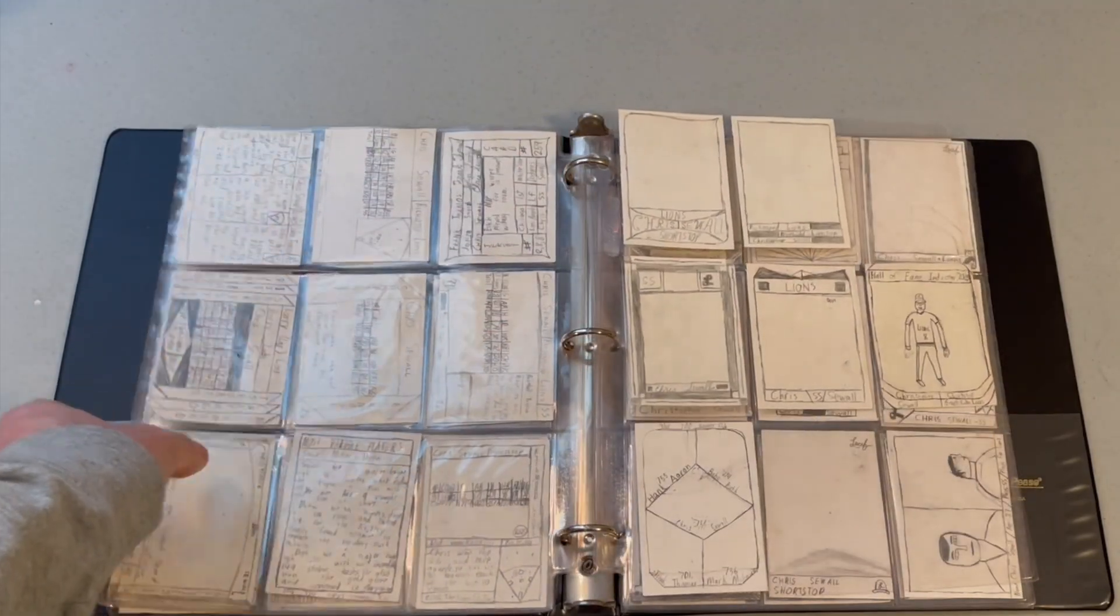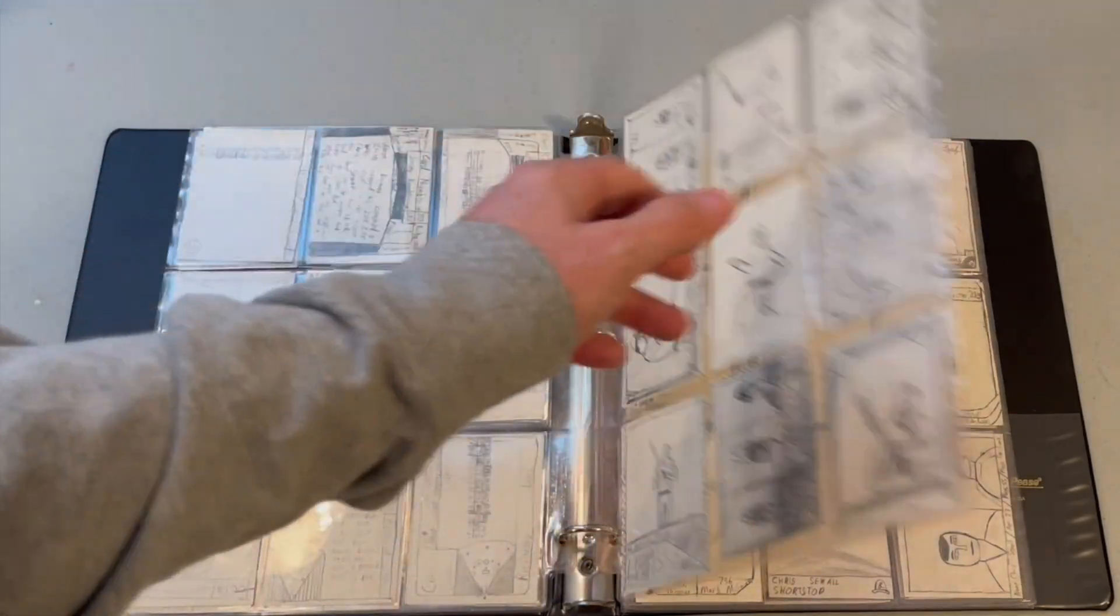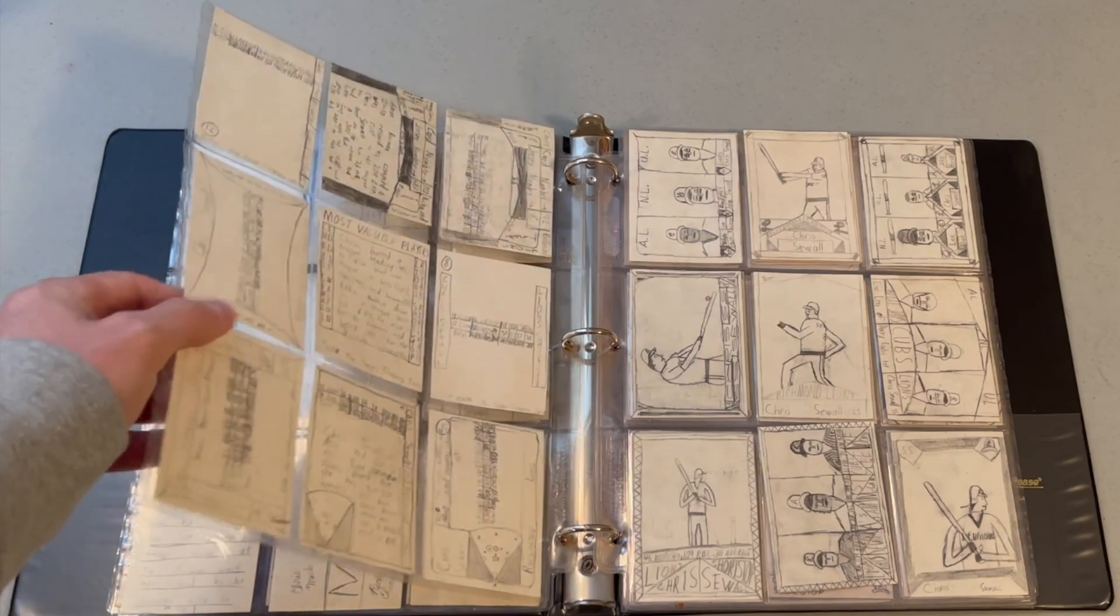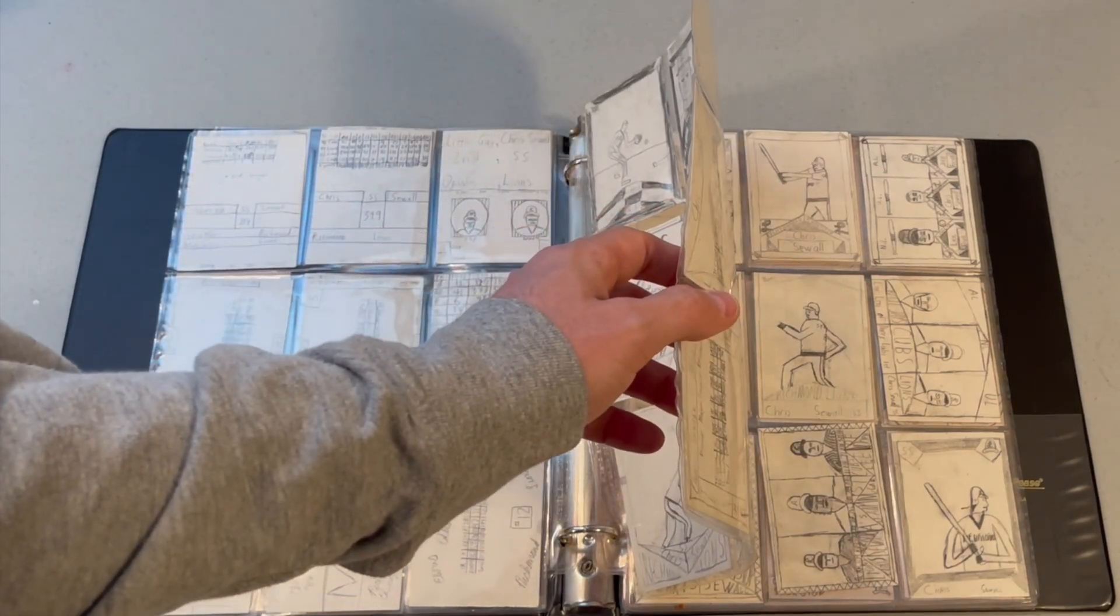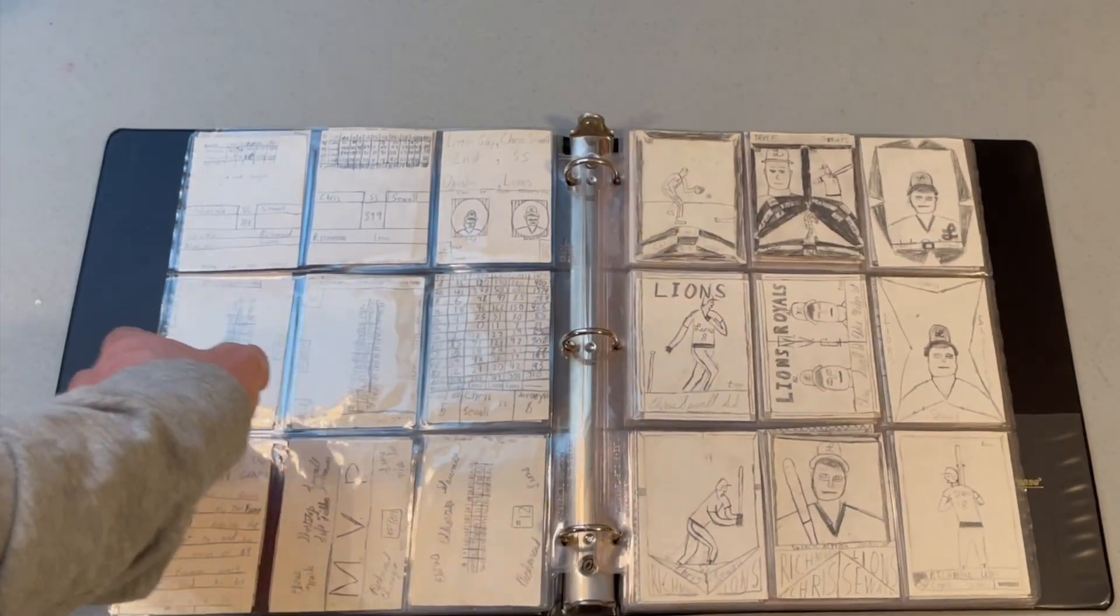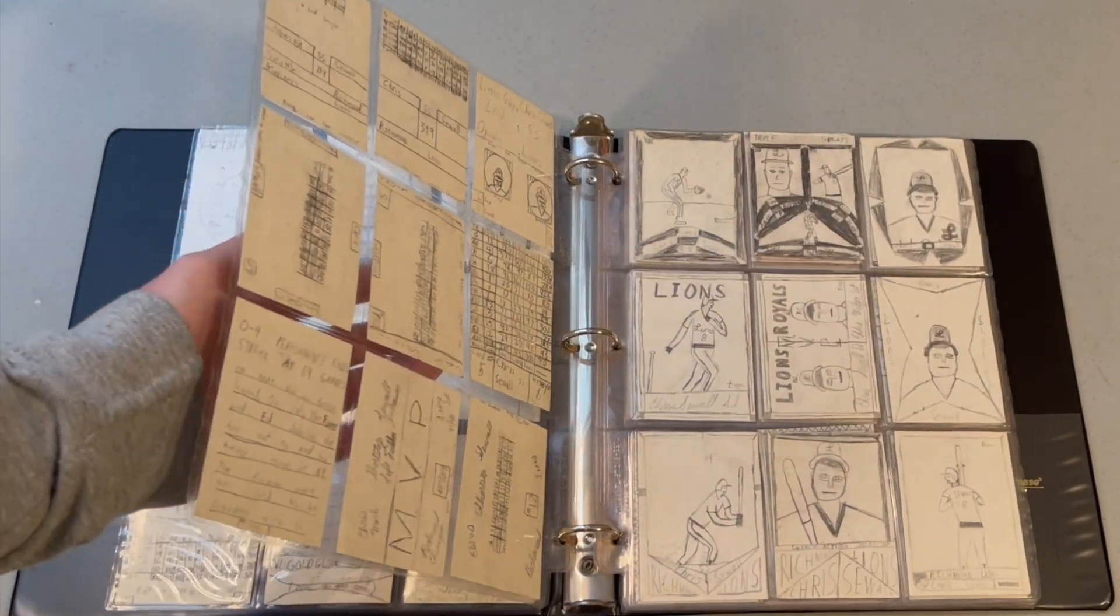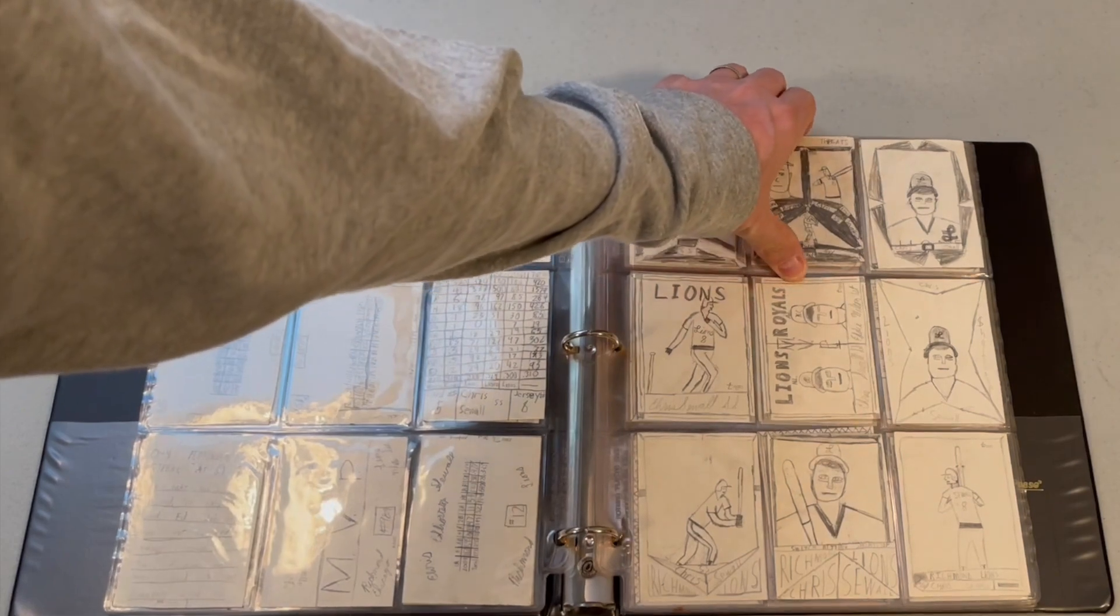But yeah, that's my Richmond Lions collection. It's really a Chris Sewell collection. I mean, maybe the best Chris Sewell collection I've ever come across in my hobby-dealing career. Complete Topps run, some early Leaf cards, some early Score Flyers cards, a couple of inserts at the back. Really impressive collection.